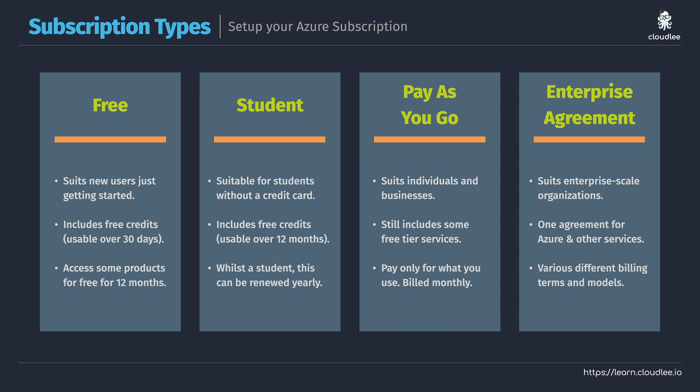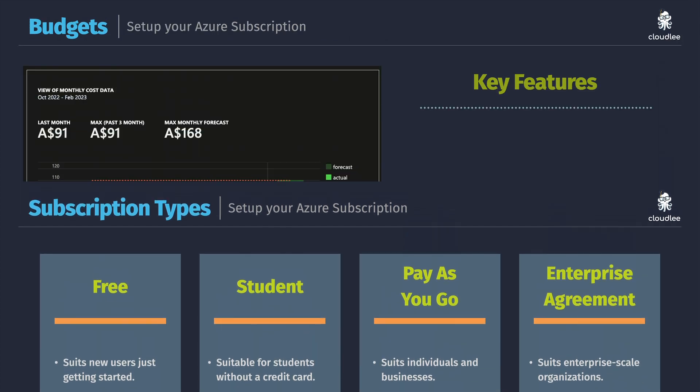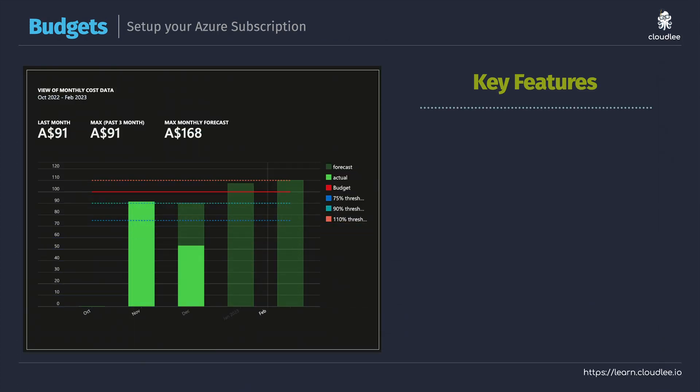Before we move ahead to set up your own Azure environment, I want to call out the use of budgets. When you're first getting started using Azure — and in fact even when you use Azure in a corporate environment — it's a really good practice to set up a budget. With a budget, you can actually get alerts from Microsoft based on the amount of money that you are actually spending. For example, I might set a limit of $110 per month — and you can use your own local currency for this as well. What we're talking about is the ability to receive alerts in the event that we've reached different thresholds of our budget, such as 50%, 80%, 100%, whatever you actually want to configure.